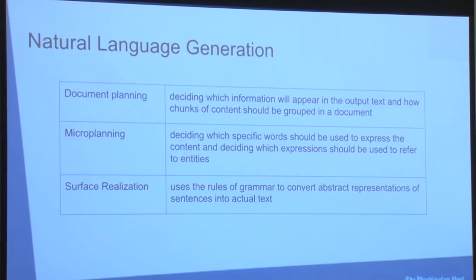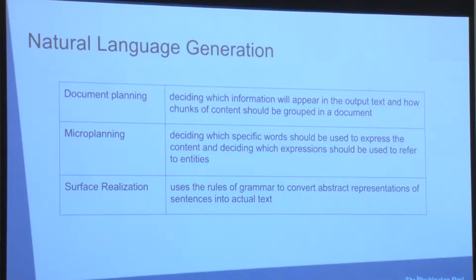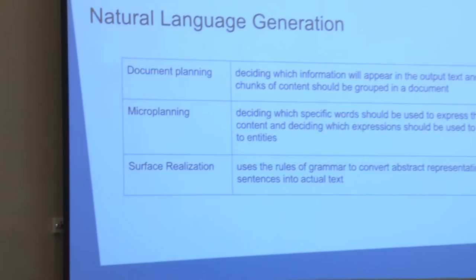Document planning involves deciding which information will appear in the output text and how chunks of information should be grouped in a document. For example, if we're writing a story about an election, we can start with a lead representing the current status of the race, then move to another paragraph about the balance of power. Microplanning is deciding which expressions should be used to refer to entities — for example, in the Olympics, if we're talking about pole vault, we'd say 'with a jump of five and a half meters.' Surface realization is where we take data and decisions from the planning stages and finally create text.